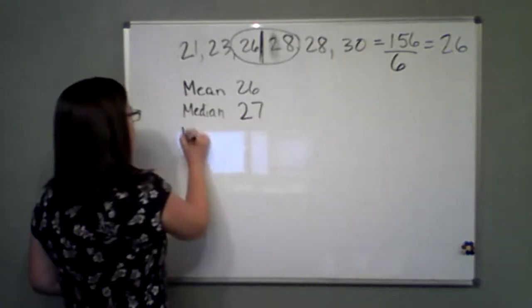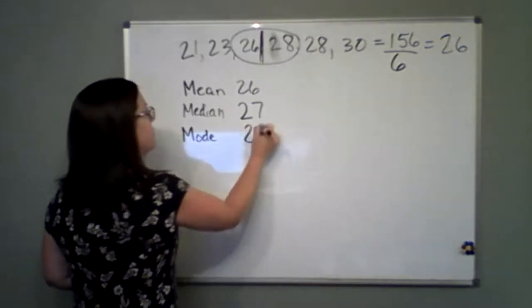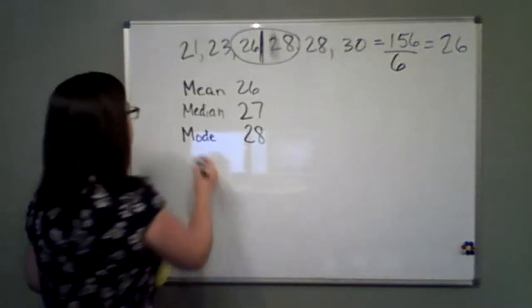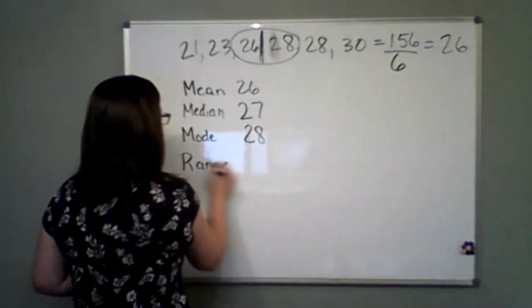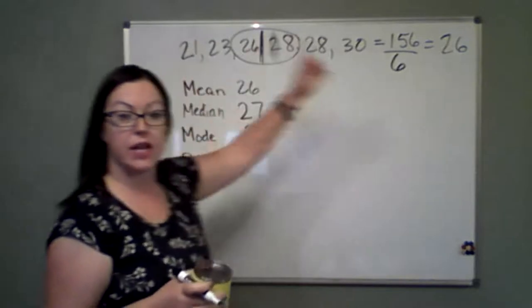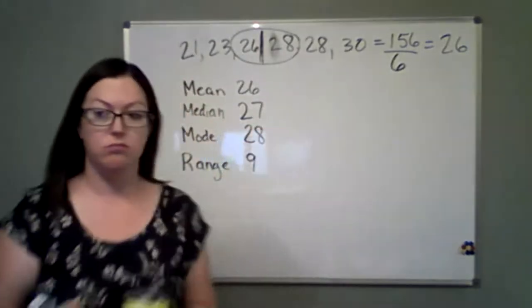27. Okay, what's our mode? 28. 28, because mode is the most frequently occurring value. And then the range. What's the range? We didn't cover that yesterday. 9. It's going to be 9. So, it's the difference between the lowest and highest value. So, we had a range of 9. Wonderful.